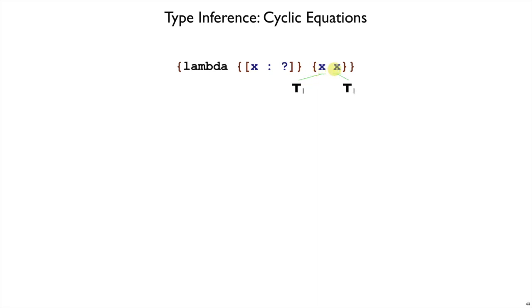And here we have a function call, x applied to x. Our general strategy as function calls is to make up a type for the result, t2, and we say the type of the function part here, this t1, is equal to an arrow type that returns t2.